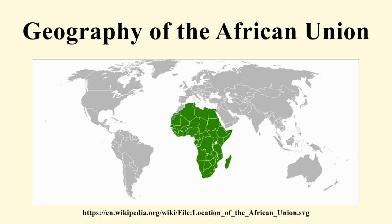Guinea-Bissau joined the OAU on February 11, 1975. At the time, it was still considered a dependency of Portugal; it gained independence on September 10, 1974. Cape Verde, Comoros, Mozambique, and São Tomé and Príncipe joined the OAU on July 18, 1975.